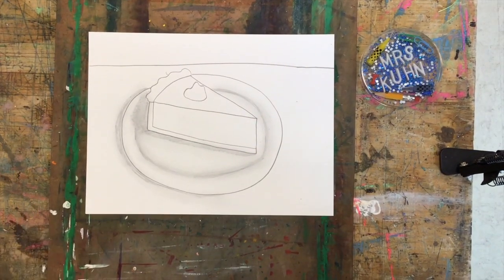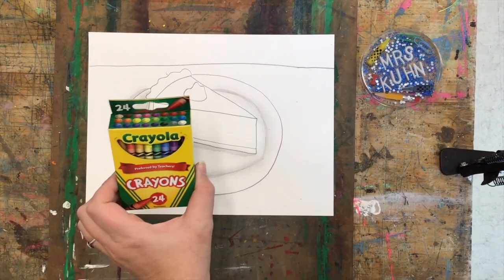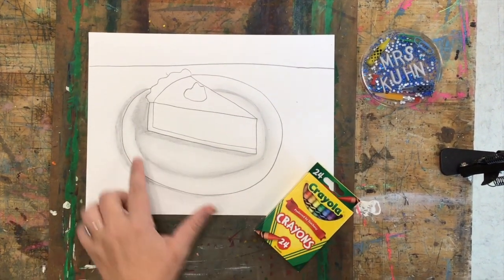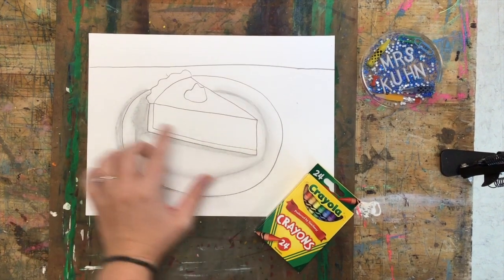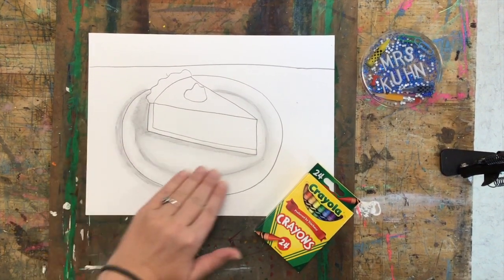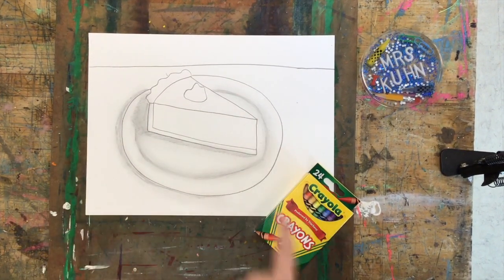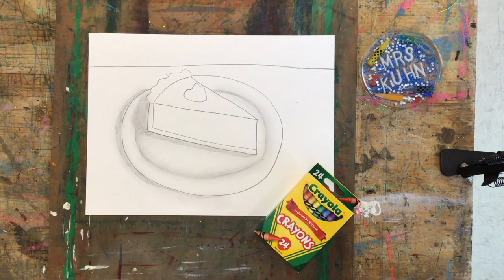Okay, our next step is to add color. So we're going to use crayons to add color to our pie picture. I'm going to leave my plate white so that I don't accidentally cover up my shadows or my shading that I did. And I'm going to speed this video up.